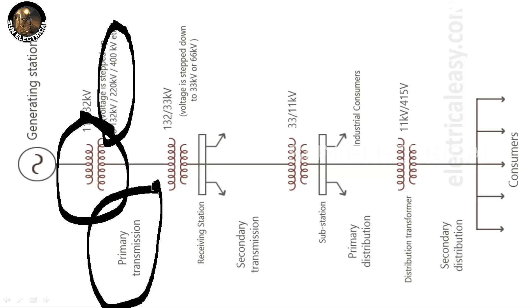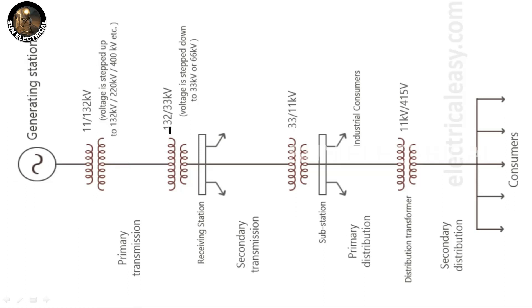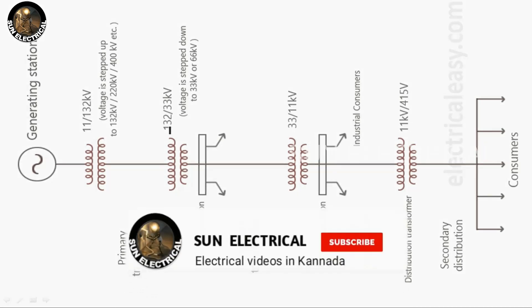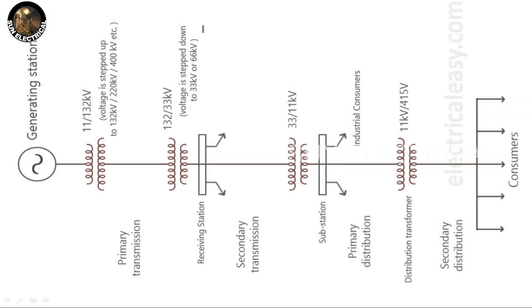Primary transmission, then secondary transmission. For example, 132kV power supply is transmitted via secondary transmission substation, where it is stepped down — 132kV or 66kV — using a step-down transformer, then goes to primary distribution.